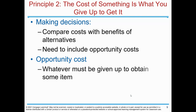Principle two: the cost of something is what you give up to get it. Making decisions involves comparing costs with benefits of alternatives. Opportunity cost is defined as whatever must be given up to obtain some other item.